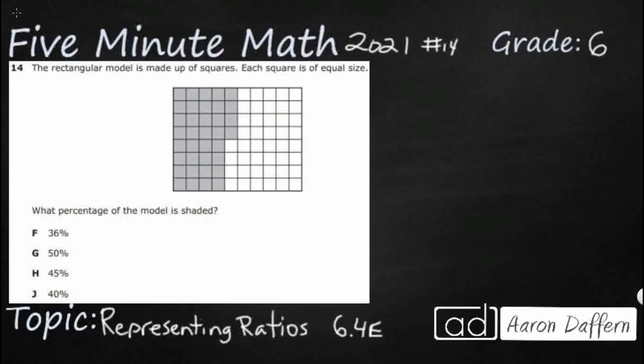So we have this rectangular model made up of squares and each square is of equal size which means we can look at this as a fraction and remember that fractions are also a different way of representing ratios.